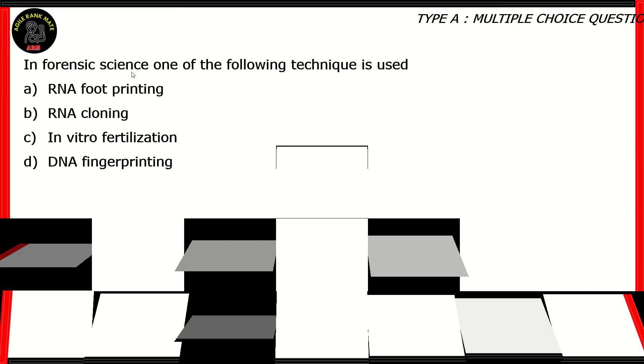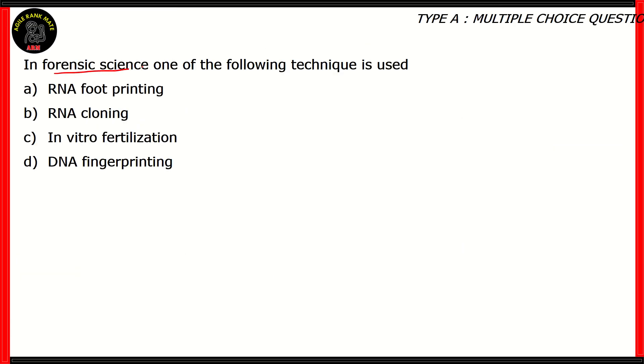Let's look at the next question. In forensic science, one of the following techniques is used: RNA footprinting, RNA cloning, in vitro fertilization, DNA fingerprinting. Forensic science is where you have to use science to solve a particular mystery. Let's look at each of the scenarios.